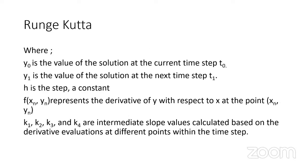The same parameters used in Euler's method are used in RK4. The key difference is that instead of finding y at different x points directly, RK4 uses intermediate slope values k₁, k₂, k₃, and k₄, which are then aggregated to find the value of y at that particular point.